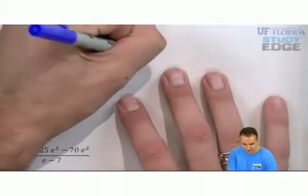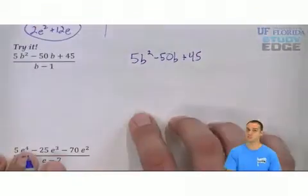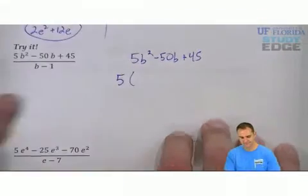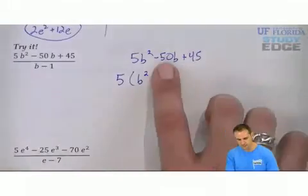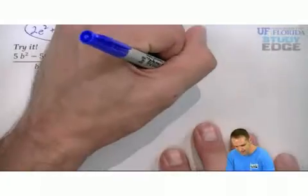Let's start by writing down the numerator: 5b² - 50b + 45. GCF. They're all divisible by 5. 5 gets factored out. 50 divided by 5 is 10b. 45 divided by 5 is 9.